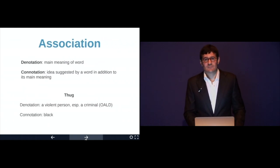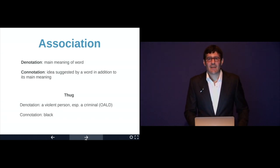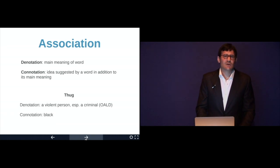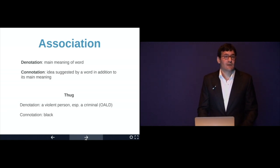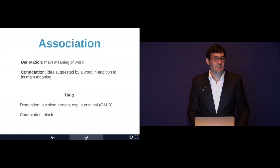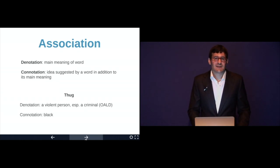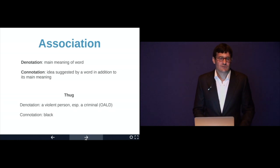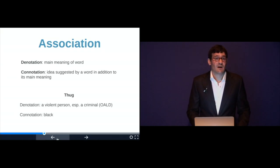Next is association. We have a distinction between the denotation and the connotation. The denotation is the main or basic meaning of a word. The connotation is the idea suggested by a word in addition to its main meaning. For example, I'm sure some of you listen to rap music and hear the word thug or thug life. The denotation of a thug is a violent person, especially a criminal — you look it up in the Oxford Advanced Learner's Dictionary. The connotation of thug, unfortunately in America, has a very racist or racial overtone. So these are the different things that can be involved in knowing what a word is.